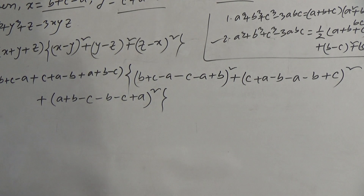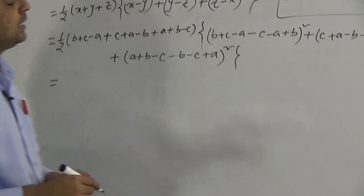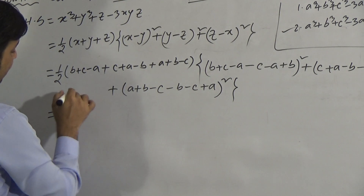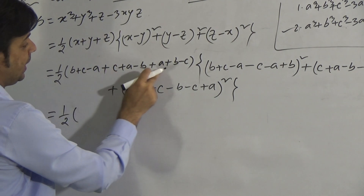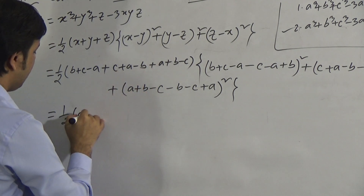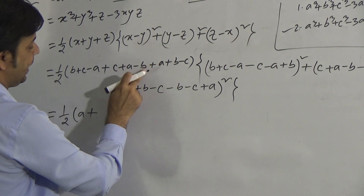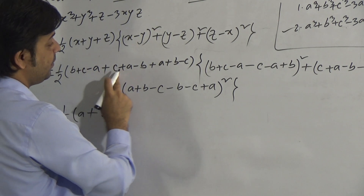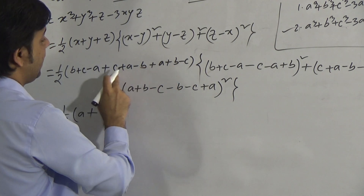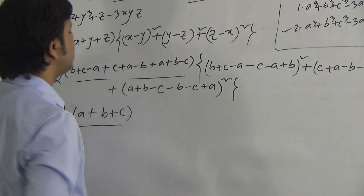Now we calculate. For (x + y + z): the a terms give −a + a + a = a; the b terms give b − b + b = b; the c terms give c + c − c = c. So x + y + z = a + b + c. For (x − y): 2b − 2a. For (y − z): 2c − 2b. For (z − x): 2a − 2c.